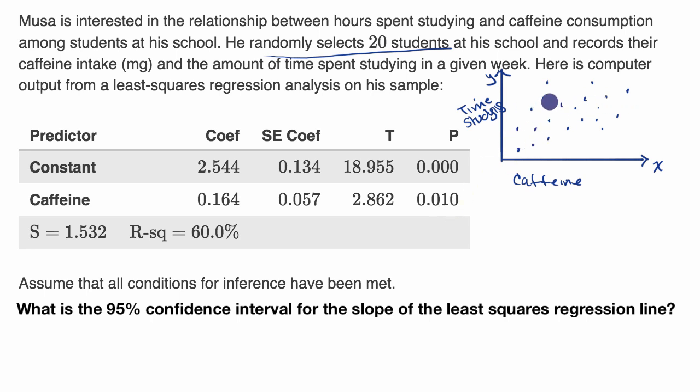He inputs these data points into a computer in order to fit a least squares regression line. And let's say the least squares regression line looks something like this. And a least squares regression line comes from trying to minimize the square distance between the line and all of these points. And then this is giving us information on that least squares regression line. The constant coefficient tells us essentially what is the y-intercept here, so 2.544.